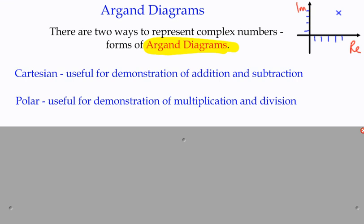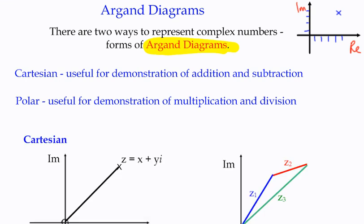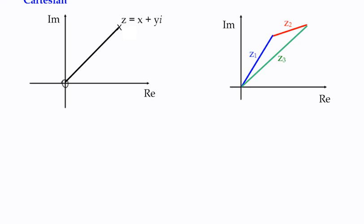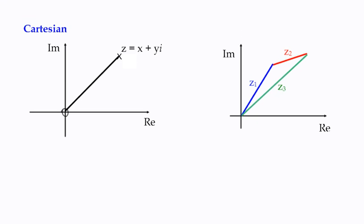First of all, we're going to have a look at our Cartesian diagram. As displayed, on the left-hand side we've got our axes labelled real and imaginary — we just use the first two letters — which means we can plot any complex number. For instance, if this were the number 3 plus 2i, then we would mark 3 on the real axis and 2 on the imaginary axis, and we could say at that point z equals 3 plus 2i.